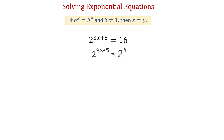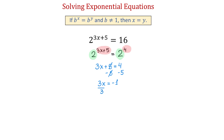According to the property above, if the bases are the same, then the exponents will be equal. So we will work with the exponents and say that 3x plus 5 equals 4. To solve this equation for x, first we will subtract 5 from both sides. Then on the left side 5 and negative 5 will cancel and we will have 3x, and on the right side 4 minus 5 is negative 1. We will divide both sides by 3 and x will equal negative 1 over 3.